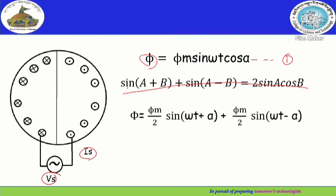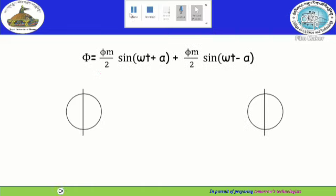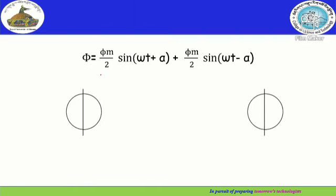Using the trigonometric identity sin(A+B) + sin(A−B) = 2·sin(A)·cos(B), we can simplify equation 1. We get: Phi = (Phi_M / 2)·sin(ωt + α) + (Phi_M / 2)·sin(ωt − α). From this simplified equation, we can identify the first part as Phi_B acting in one direction, and the second part as Phi_F acting in the opposite direction.